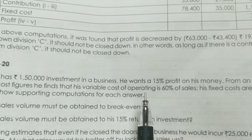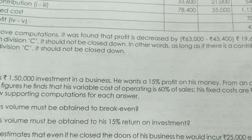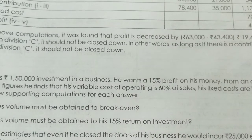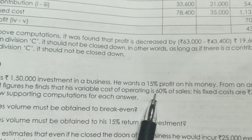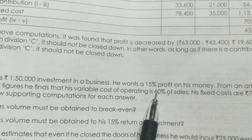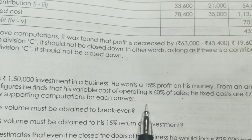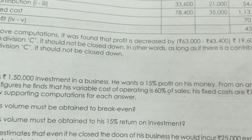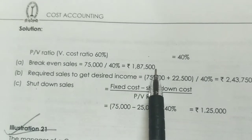One question asks about the PV Ratio. PV Ratio plus variable cost percentage equals 100%. Since variable cost is 60% of sales, the PV Ratio is 40%. We have 75,000 divided by 40% PV Ratio for the break-even sales calculation.